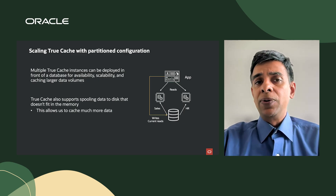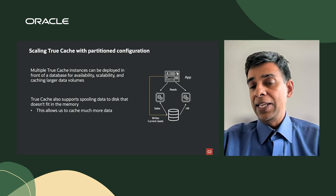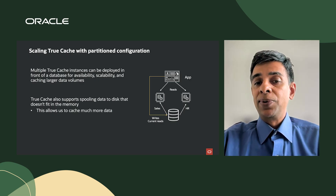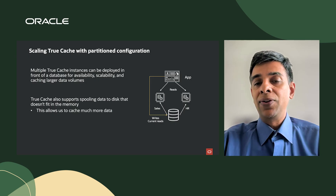True Cache also supports scaling with partition configuration. Multiple True Cache instances can be deployed in front of a database for availability, scalability, and caching larger data volumes. For example, you could have two True Cache instances — one supporting sales data and another supporting HR data — for the same primary database. True Cache also supports pooling data to disk for data that doesn't fit in memory. Typically these are NVMe SSDs, providing low latency access and extending the data you can cache.